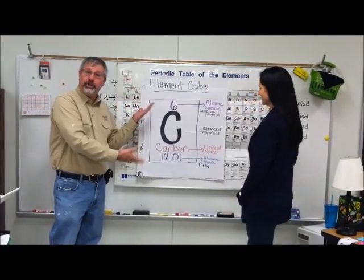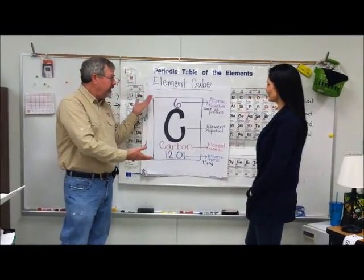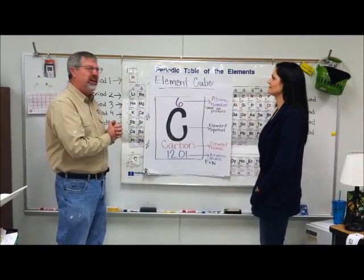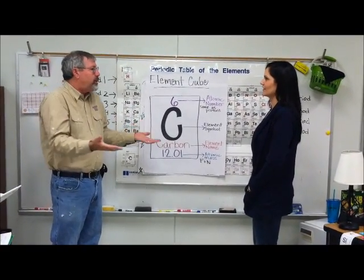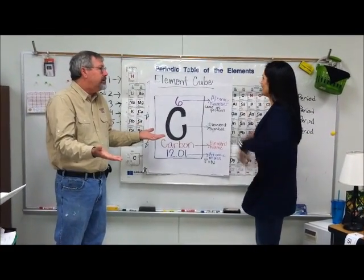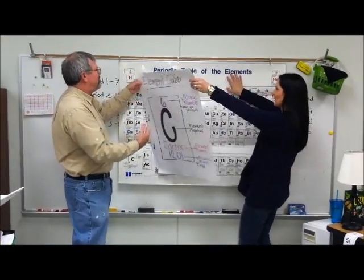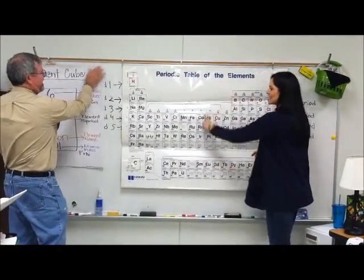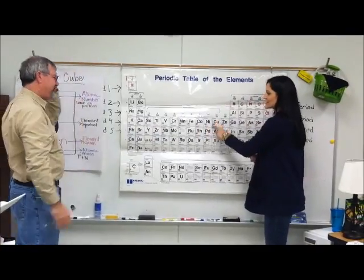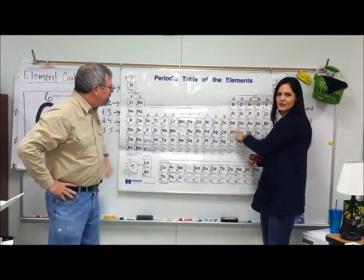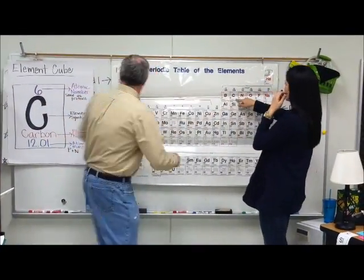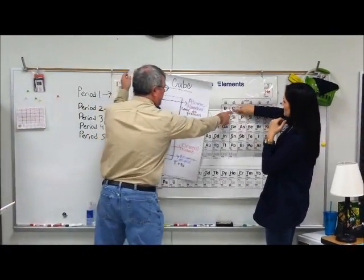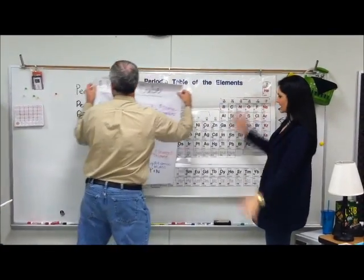Here's our element cube again — Carbon. It's got all that information on it, but if you put all the element cubes together, what do you get? I think you get a big periodic table. If you notice, each one of these is its own little element cube. Yeah, there's carbon right there — same thing. Very good.